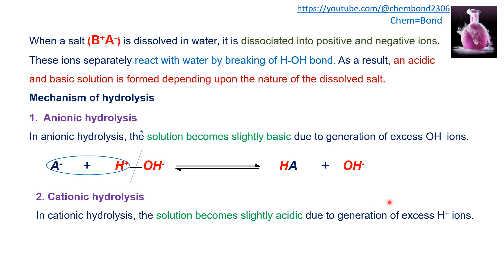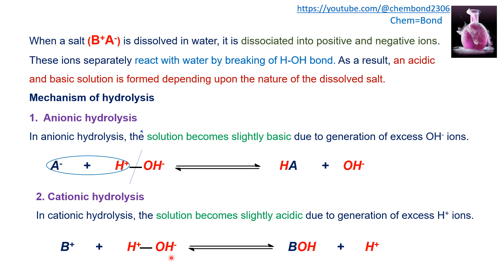The second type is cationic hydrolysis, where the positive part of the salt interacts with water and produces excess H⁺ ions, making the resultant solution acidic. In the reaction, due to electrostatic attraction, the cation interacts with the OH⁻ part of water, producing BOH and H⁺. This excess H⁺ gives an acidic nature to the solution, and the pH will be less than 7.